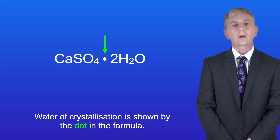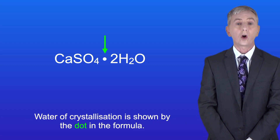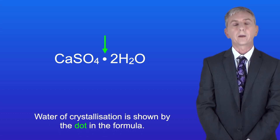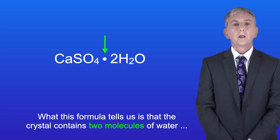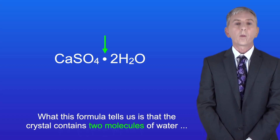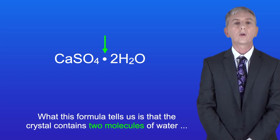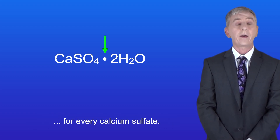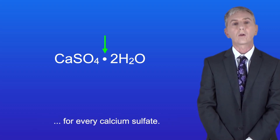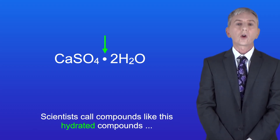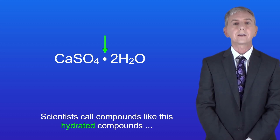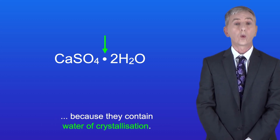Water of crystallization is shown by the dot in the formula. So what this formula tells us is that the crystal contains two molecules of water for every calcium sulfate. Scientists call compounds like this hydrated compounds because they contain water of crystallization.